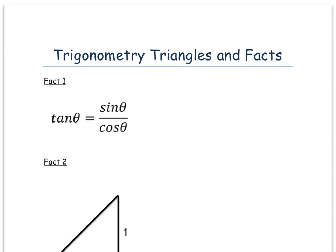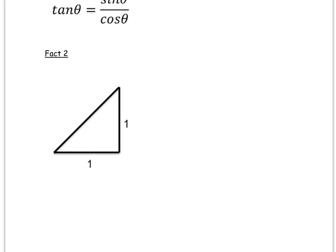Fact 2 is to do with a right angle triangle of length 1, 1. Now, because it's a right angle triangle and both sides are 1 and 1, we know that it's an isosceles triangle, which means these two angles are 45. So, this one and the one up here is also 45.